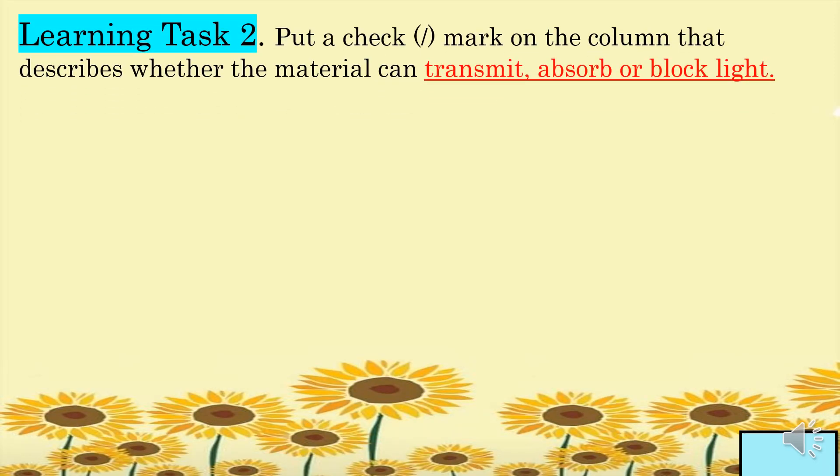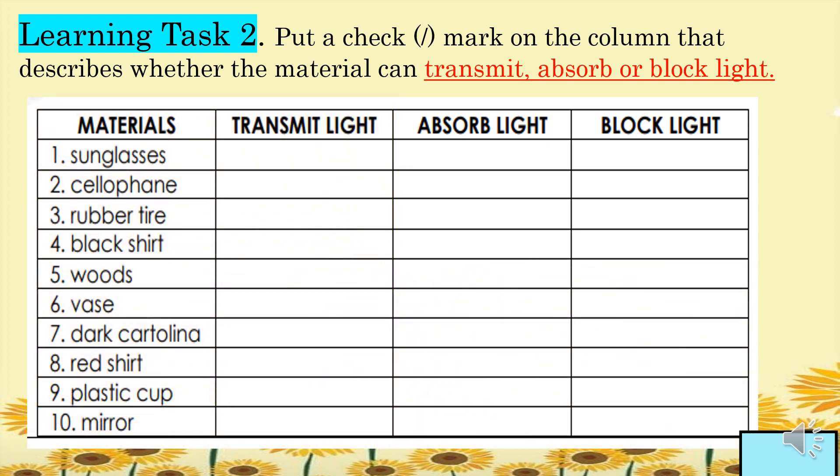For Learning Task 2, put a check mark on the column that describes whether the materials can transmit, absorb, or block light. The materials are: one, sunglasses; two, cellophane; three, rubber tire; four, black shirt; five, wood; six, dark cartolina; seven, red shirt; eight, plastic cup; and ten, mirror. You will check whether each material transmits light, absorbs light, or blocks light.